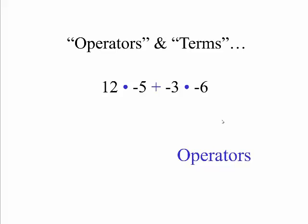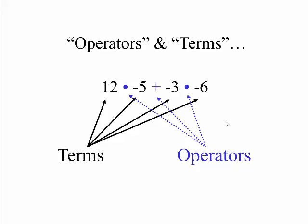Let's start with what operators are. We have this expression: 12 times negative 5 plus negative 3 times negative 6. The operators are the mathematical operators of multiplication here and here in blue, and the addition also in blue — those are the operators we're going to perform. The terms are the things separated by the operators: in this case, 12, negative 5, negative 3, and negative 6.